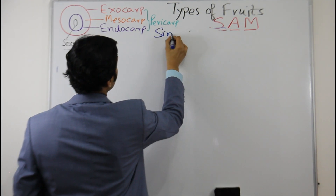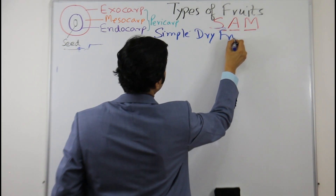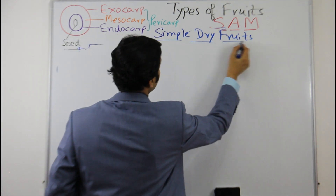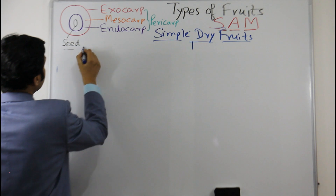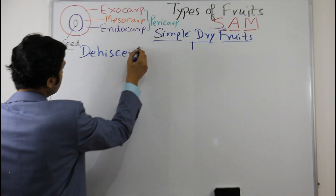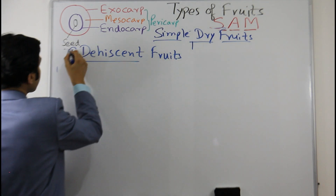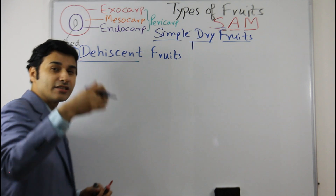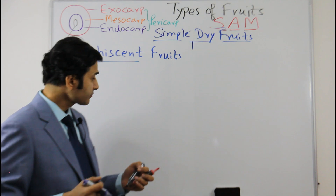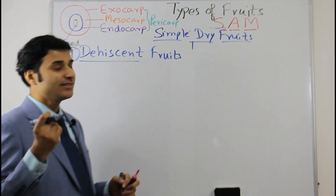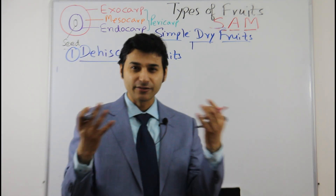So we are talking about simple dry fruits. We have already finished simple fleshy fruits. Now first, dehiscent fruits. As we discussed, dehiscent fruits have different types. I will give you a very easy method to remember all these types.